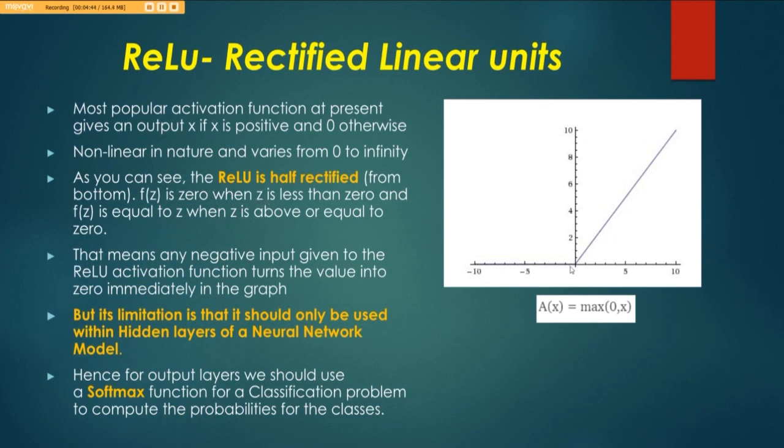If you just look here closely, it is actually half rectified, and this means that any negative input given to the ReLU activation function turns the value into 0 immediately in the graph like so. Any negative value will become a 0. But its limitation is that it should only be used within the hidden layers of a neural network model.